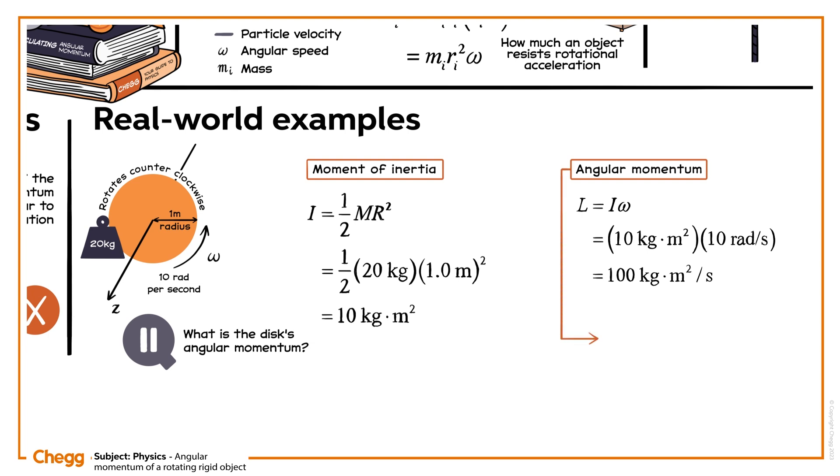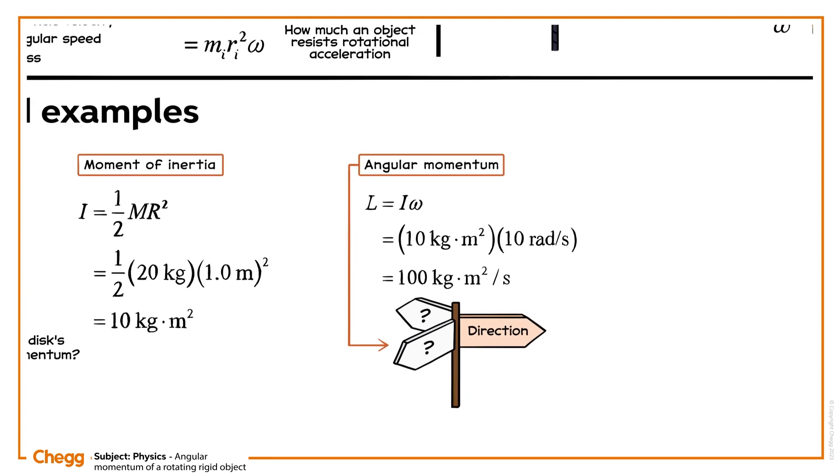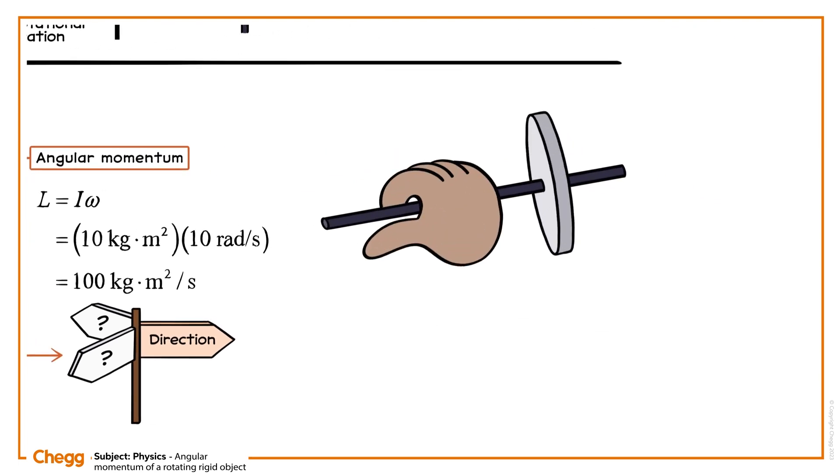But we haven't answered the question fully yet. Don't forget that angular momentum needs a direction. The question told us that the disc was moving anticlockwise. If you take your right hand and point your fingers anticlockwise, the thumb points in the direction of the positive z-axis.